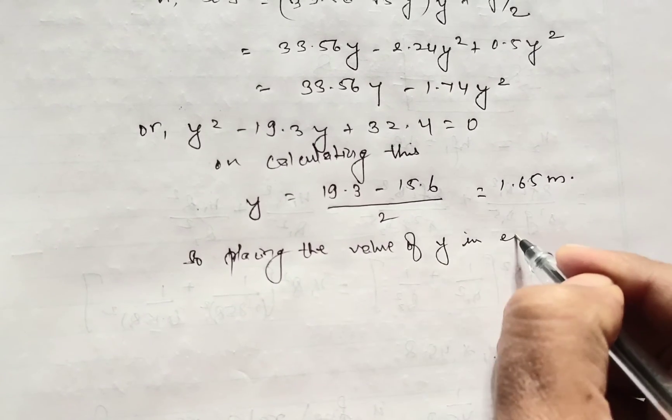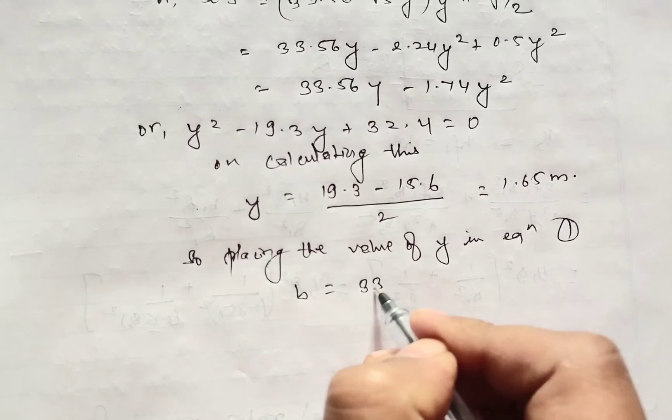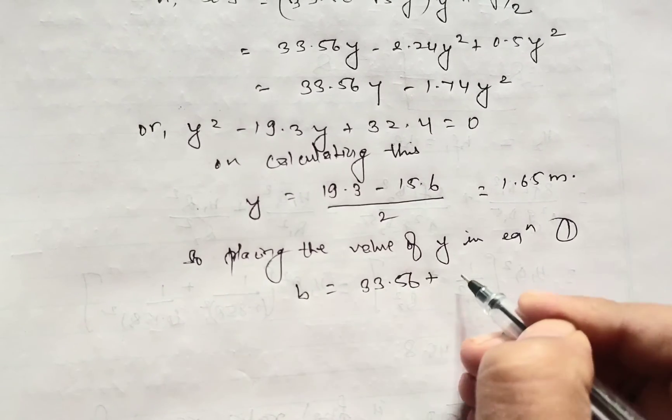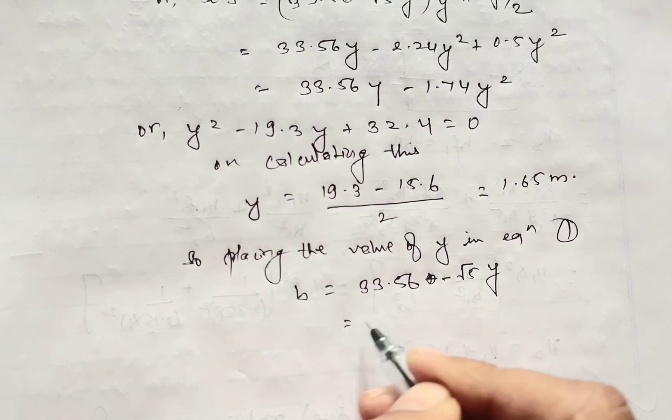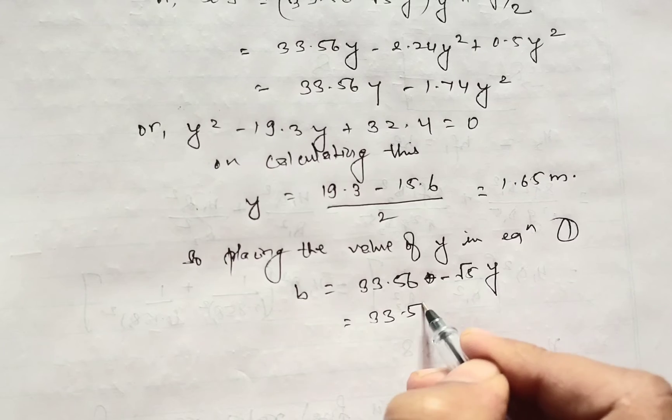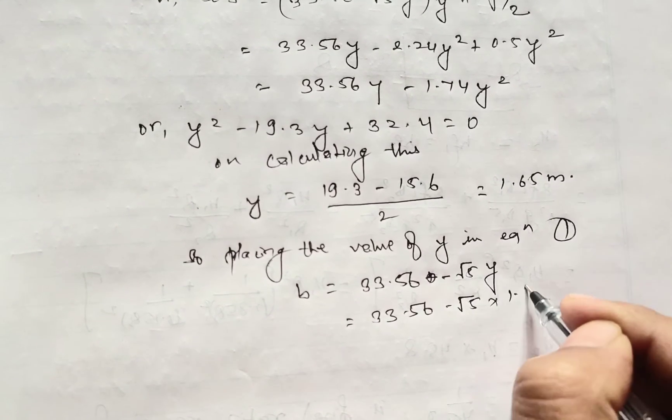So placing the value of Y in equation 1, which is B equals 33.56 minus root over 5Y, we get 33.56 minus root over 5 times 1.65.